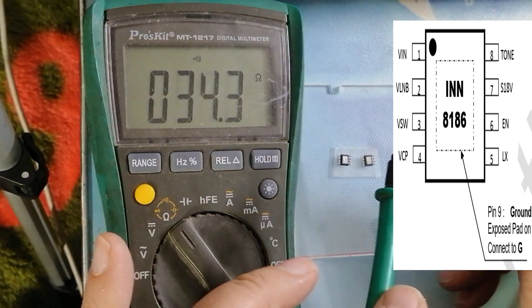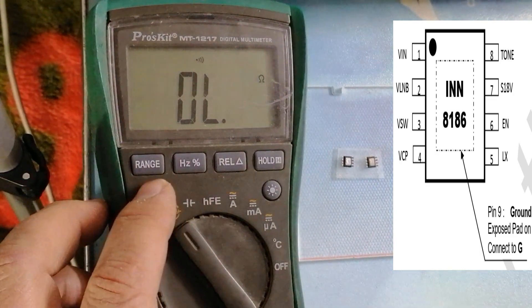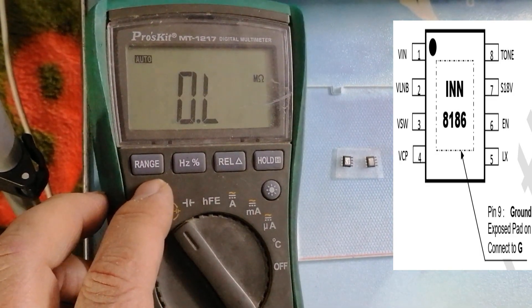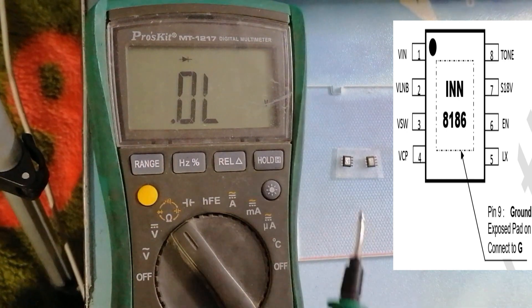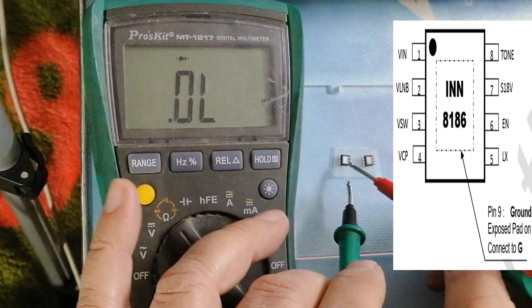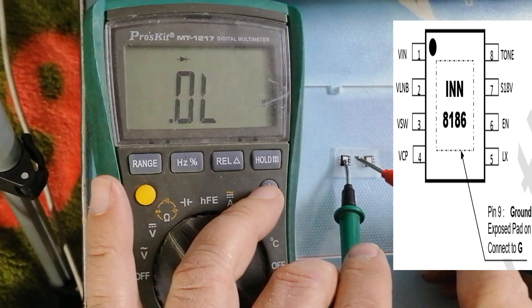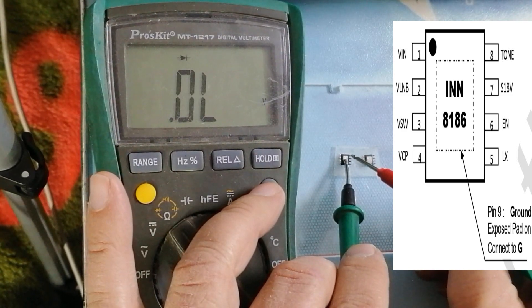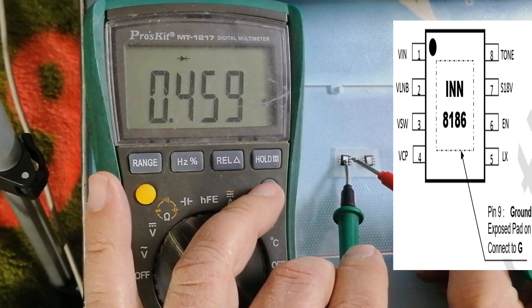Now we go into diode mode. We make a comparison between this one and the new one. Pin number 1, no reading. Pin number 2, 455 ohms.